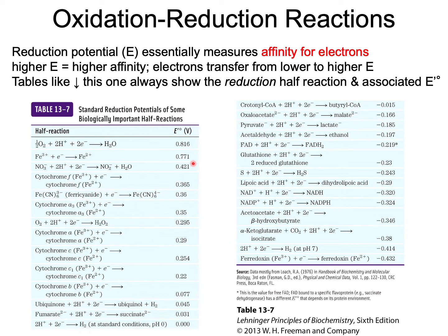Shown here is a table of standard reduction potentials of some biologically important half reactions. The reduction potential E essentially measures the affinity for electrons. A higher E means a higher affinity. Electrons transfer from lower to higher E, which means electrons from a lower-E reaction can travel to a higher-E reaction. This shows what is most reduced and what is most oxidized.